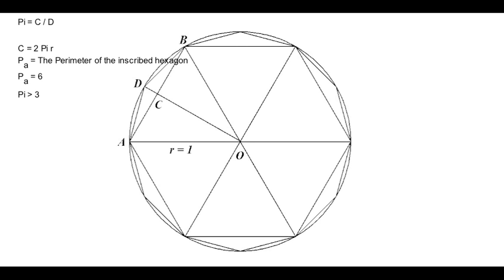Now we're going to add a 12-sided polygon to the figure. We'll also draw a line OC from the center of the circle to the midpoint of AB, dividing the triangle AOB in half and intersecting AB at a right angle. Since OC divides the equilateral triangle in half, AC is half AB, which is equal to 0.5. Also, triangle ACO is a right-angled triangle with the right angle at C, so by the Pythagorean Theorem, we can get the equation OA squared minus AC squared equals OC squared.